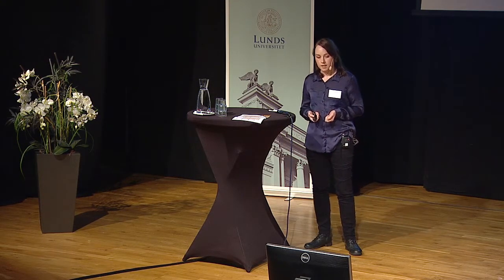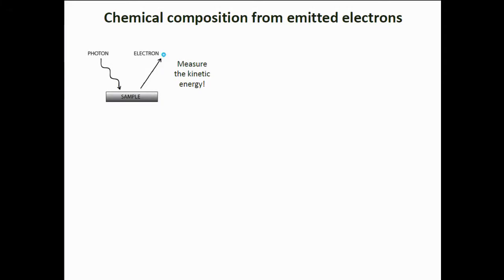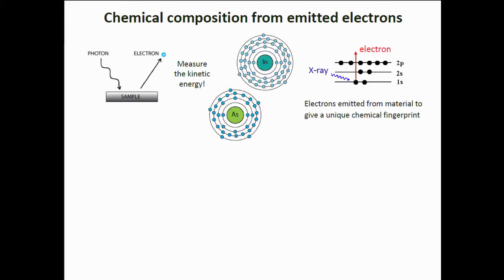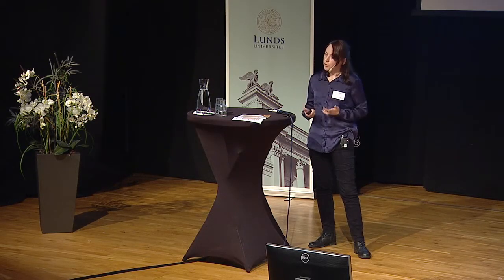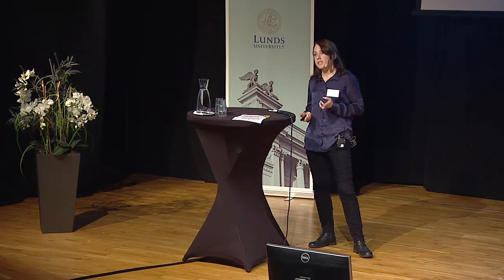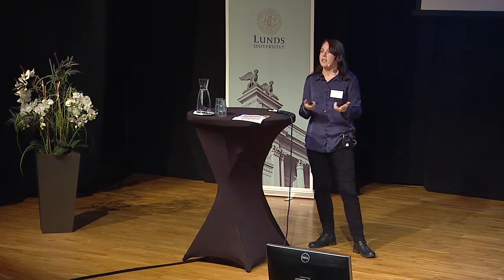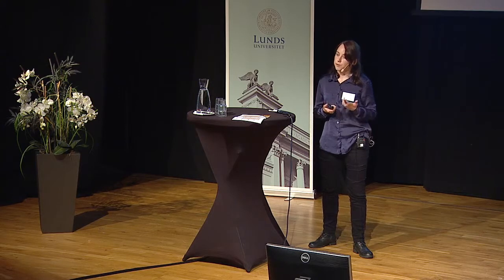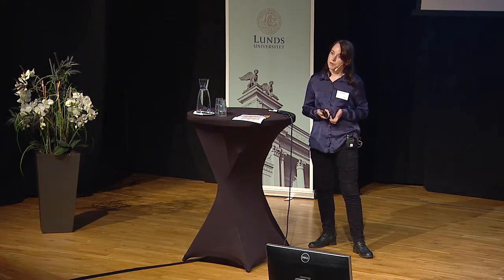The first technique is the photon-in, electron-out process, which gives us chemical information about our nanostructures. If you recall from chemistry, the basic model of an atom has a central nucleus surrounded by various electron orbital shells. The electrons in these atoms exist at various known energies. When you radiate your sample with synchrotron light — in this case X-rays — you get an excitation process occurring in the atoms of your material, and then electrons are emitted. We collect these electrons on a detector and measure their kinetic energy. This kinetic energy gives us a quite complicated chemical fingerprint, but we can attribute all the different information to the different chemical species in our nanostructures.